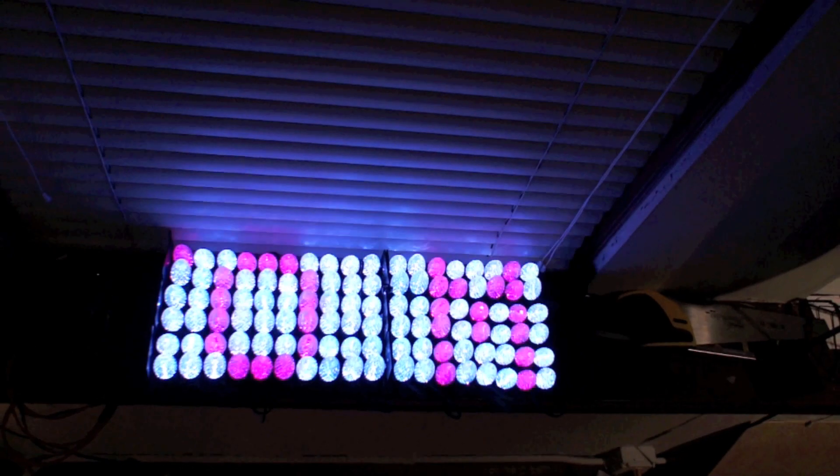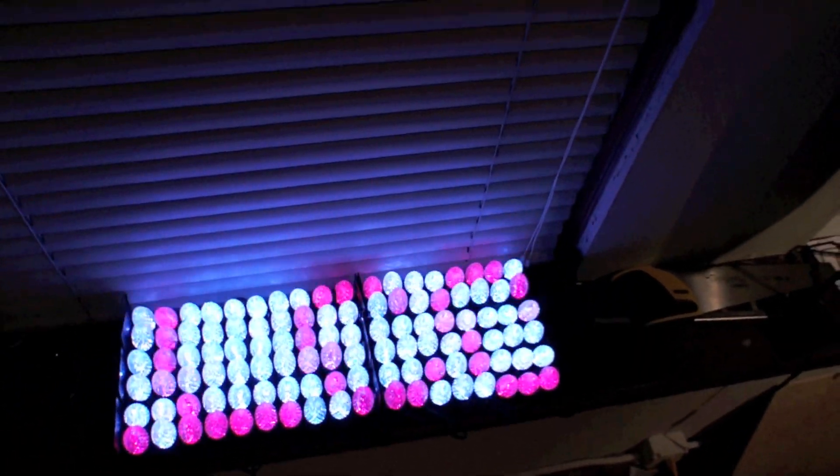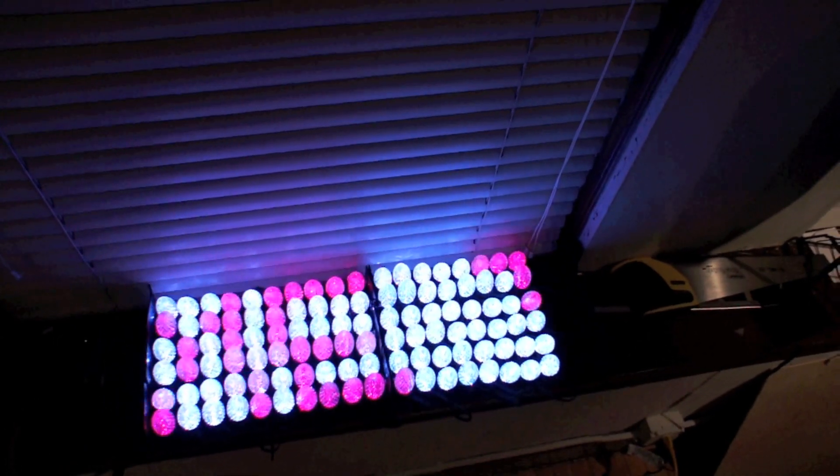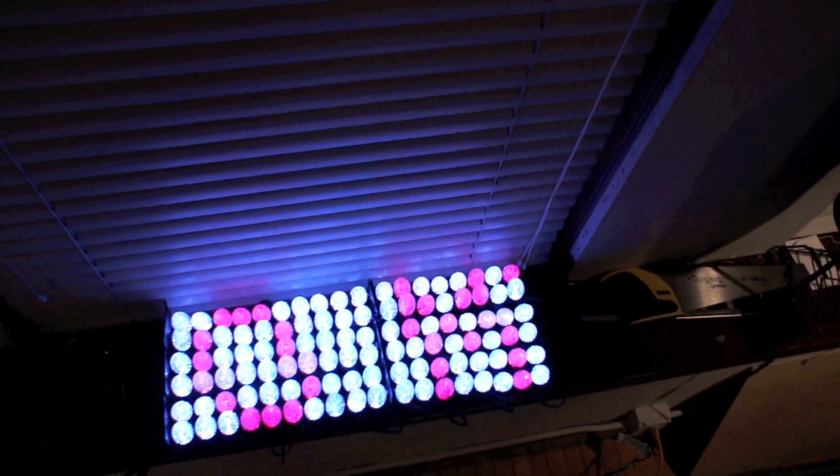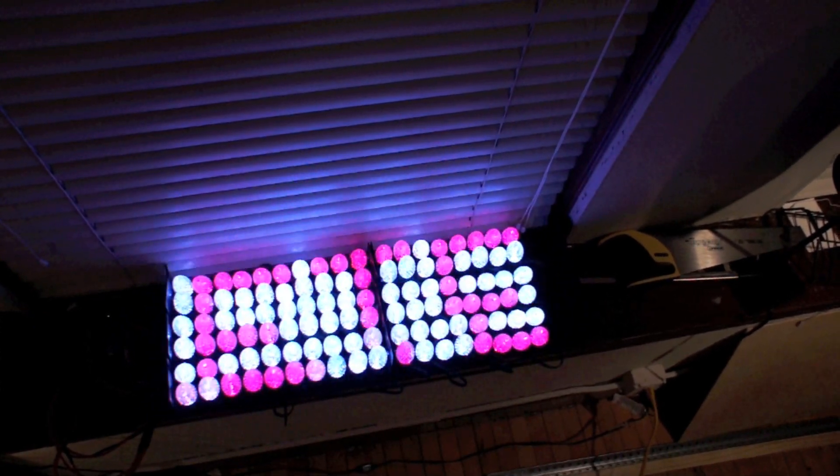There's a framebuffer and a font array of six-by-five pixel font data, which gets blitted into the framebuffer one column at a time, and then the framebuffer gets shifted one column every frame, and then the whole thing gets dumped out to the display, generating the appropriate packets to command each bulb.